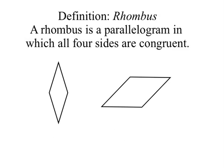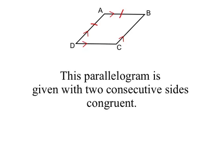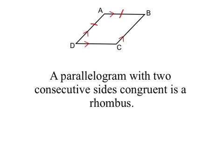And we move on to rhombuses. A rhombus is a parallelogram in which all four sides are congruent, so if you're given a parallelogram with all four sides congruent, you know that it's a rhombus — that's the reverse of the definition. Now we're given a parallelogram with two consecutive sides congruent. Since it's a parallelogram, the opposite sides are congruent, so all four sides are congruent, and it's a rhombus. We've just proven that if we're given a parallelogram with two consecutive sides congruent, it's a rhombus.